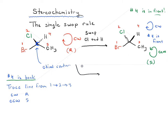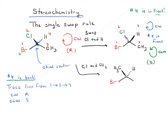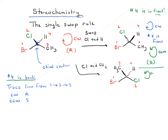Let's swap two groups that are ranked: chlorine and CH3. So we'd have bromine, then chlorine here in the plane of the page, CH3 as a wedge, and H still as a dash. When we go from 1 to 2 to 3 now, we're going counterclockwise. So this is now S.